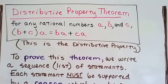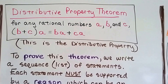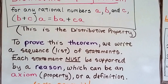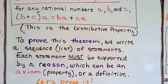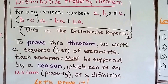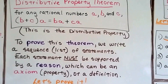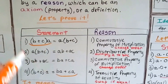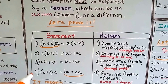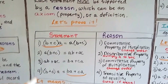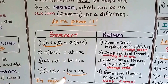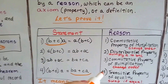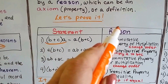To prove this theorem, we write a sequence — a list of statements. Each statement must be supported by a reason: it can be an axiom, a property, or a definition. I make a table numbered on both sides, and I write statements on the left and reasons on the right. Sometimes it could have twelve steps; sometimes just two or three — it depends on how many statements and reasons you need to complete your proof.